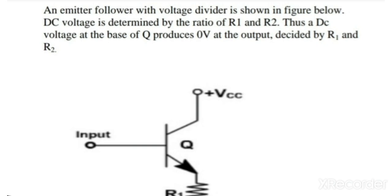There are a variety of level translator circuits. An emitter follower with a voltage divider is the simplest among them. The circuit diagram of this emitter follower circuit with voltage divider is shown here.